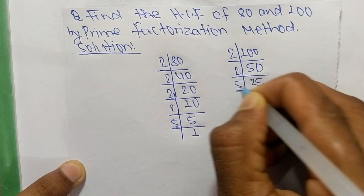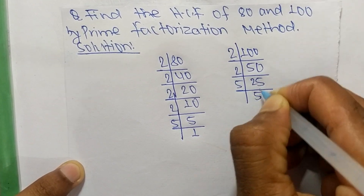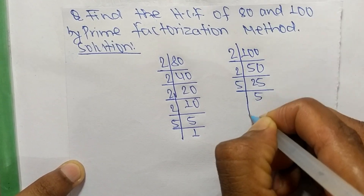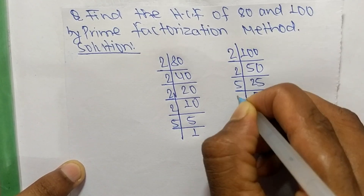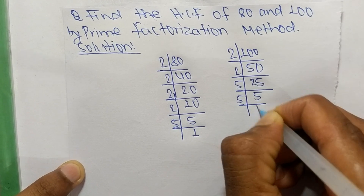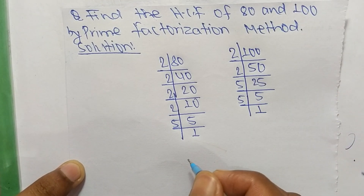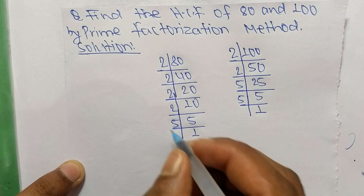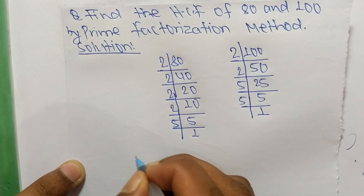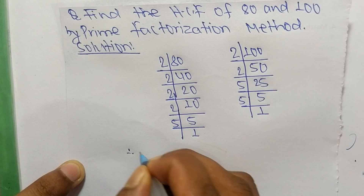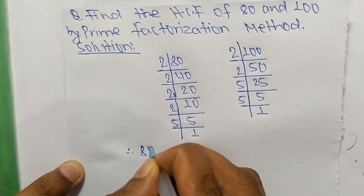5 times 5 makes 25, and 5 times 1 makes 5. So from these prime factors we can write 80.